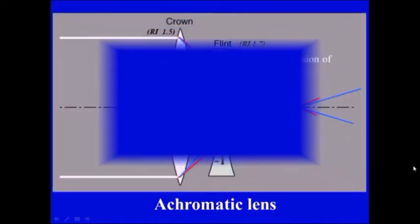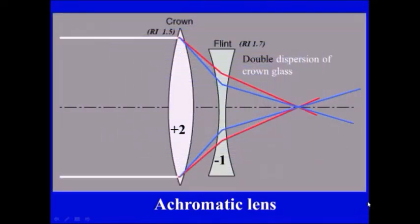To correct this we can use an achromatic lens. An achromatic lens is a double lens formed of combination of flint and crown.